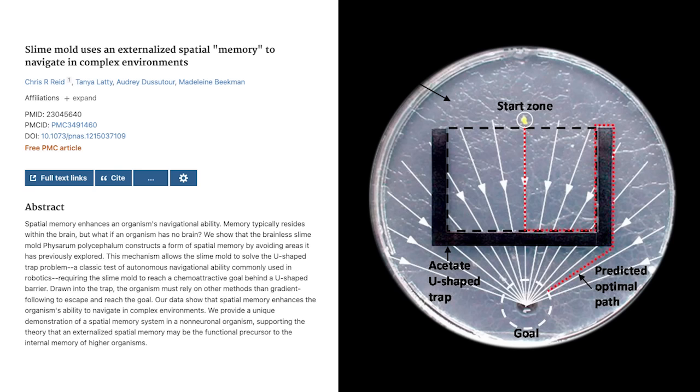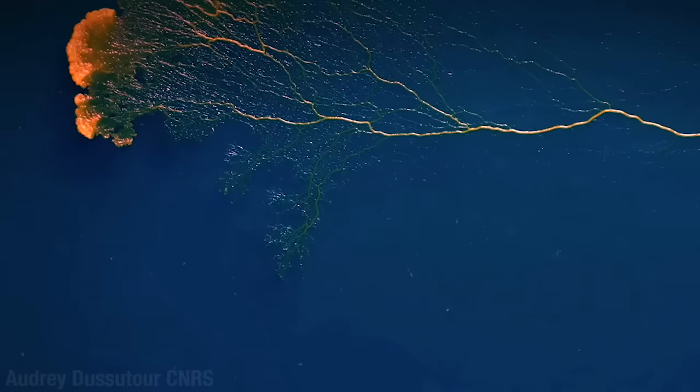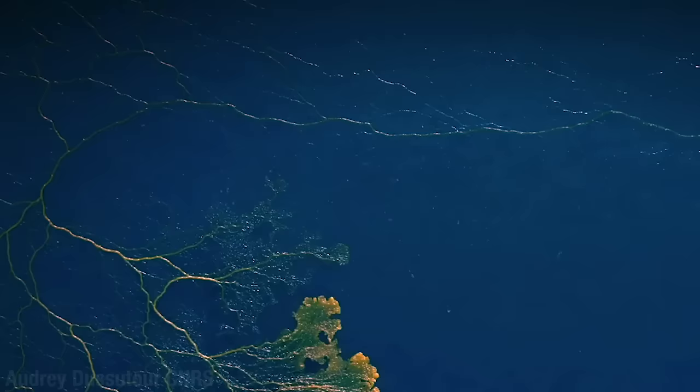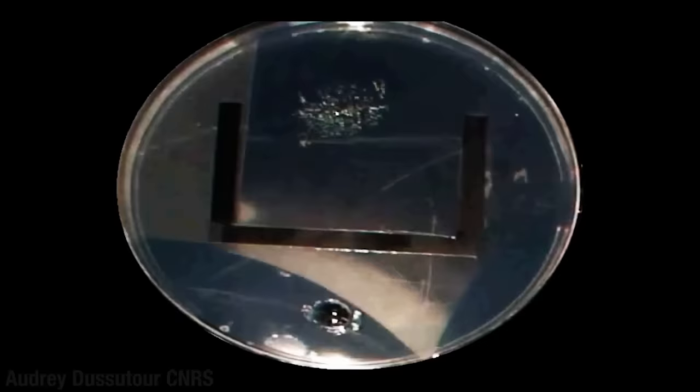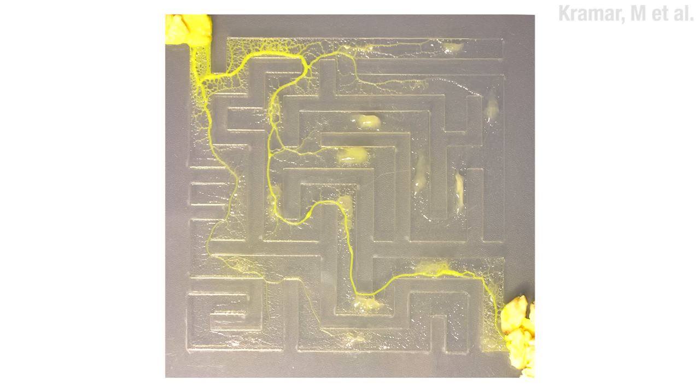So the problem here is that if the slime mold just keeps moving to where the food signal is stronger, it'll get stuck. But slime molds don't get stuck. You know why? Because it knows where it's already been. You know in the fairy tales where they leave breadcrumbs behind? It's like that. But instead of breadcrumbs, it's mucus. The slime mold leaves behind a film of snot, sort of an external map of where it's been. The mucus kind of cancels out the food signal, and it tries a new direction.